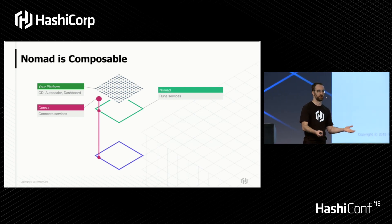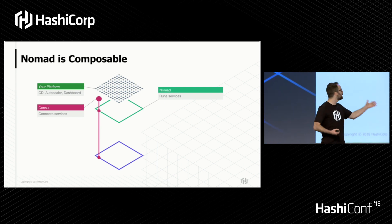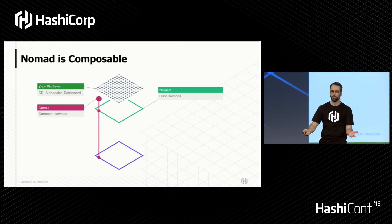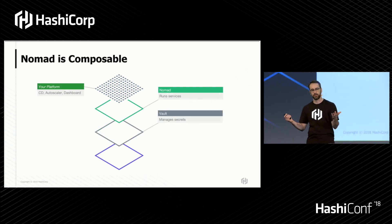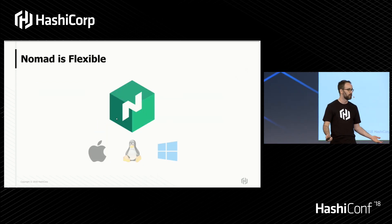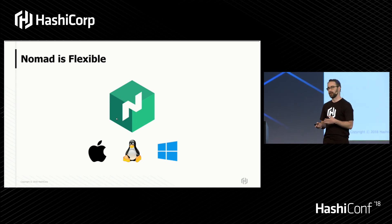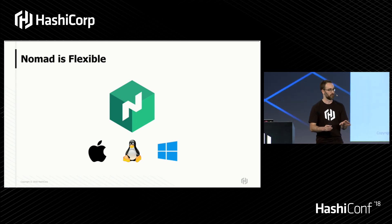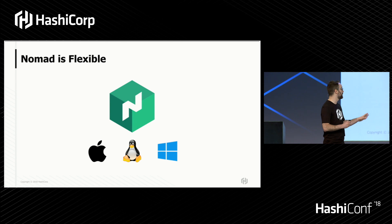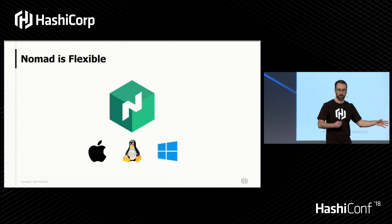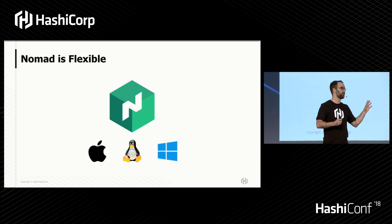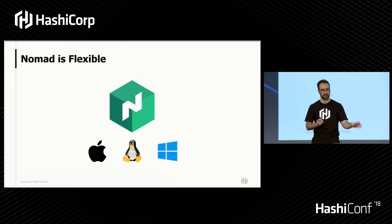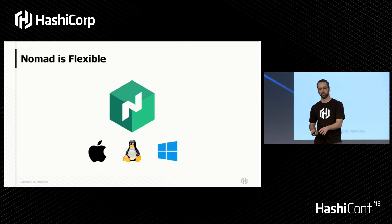And it's all pluggable. You can use whatever pieces you need. If you don't need Vault, don't use Vault. If you don't need Consul, don't use Consul. Nomad is trying to be as composable as possible and fit your workload. Part of that means running on whatever operating system you're on. We've always supported Mac OS, Linux, and Windows.